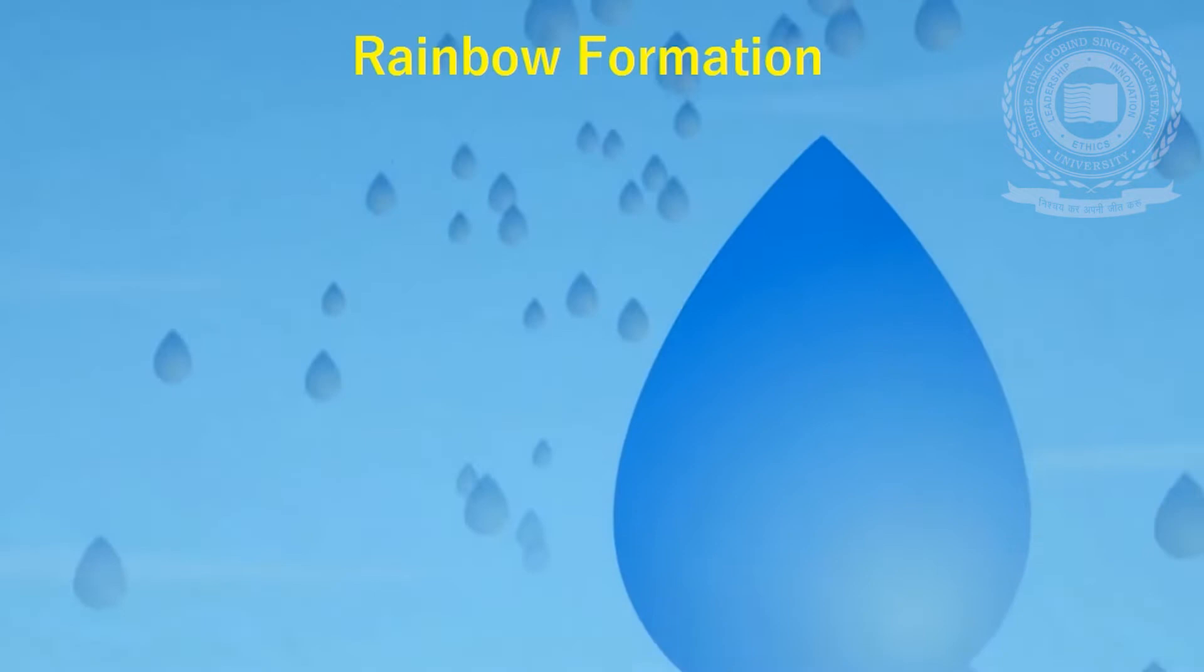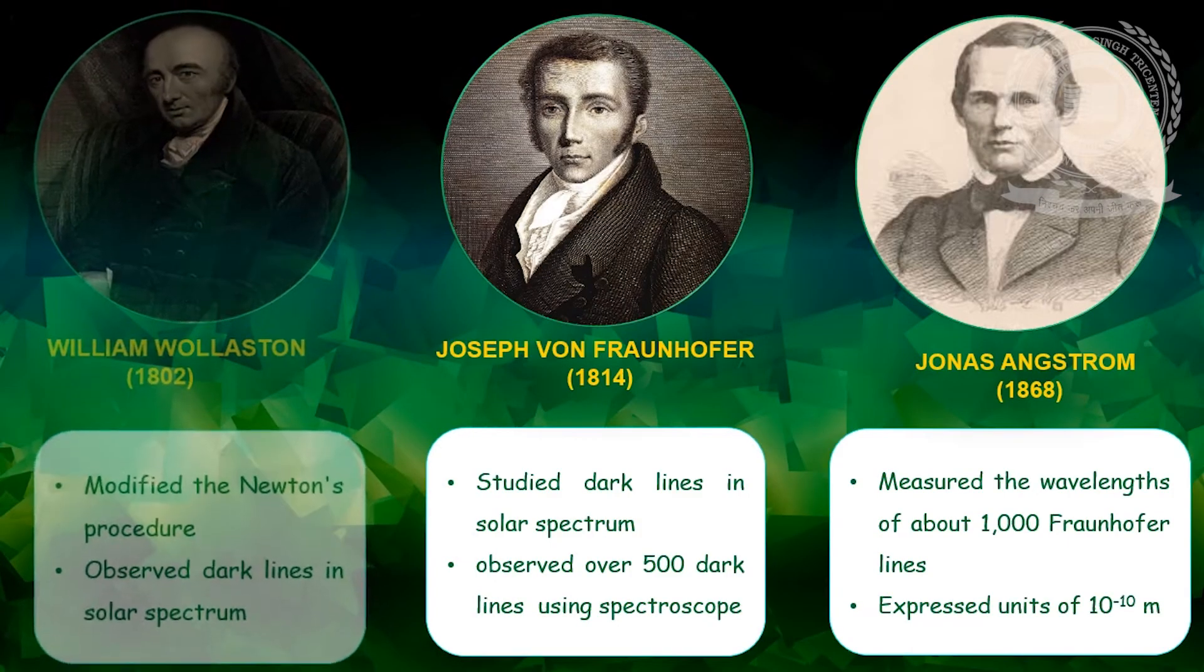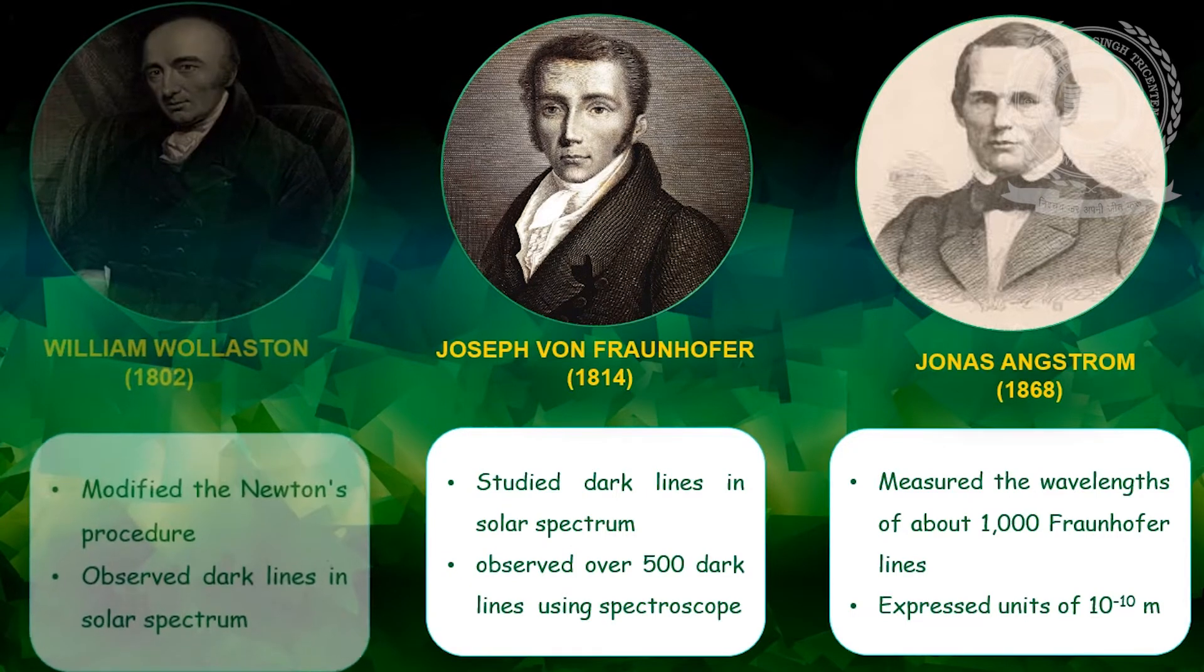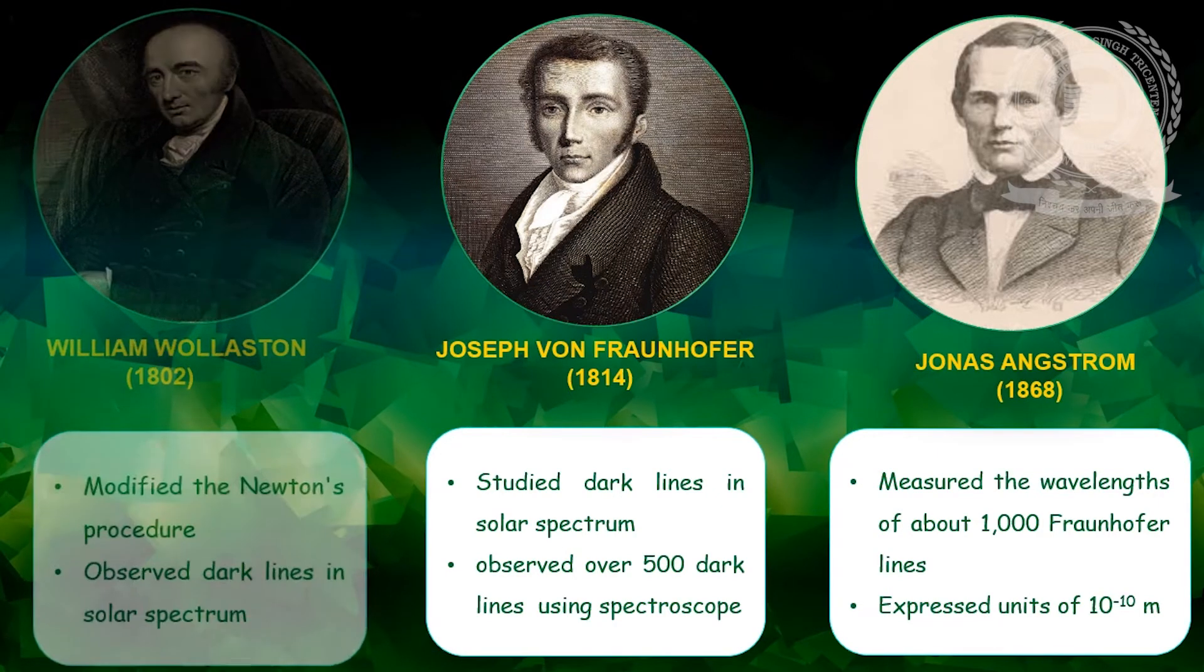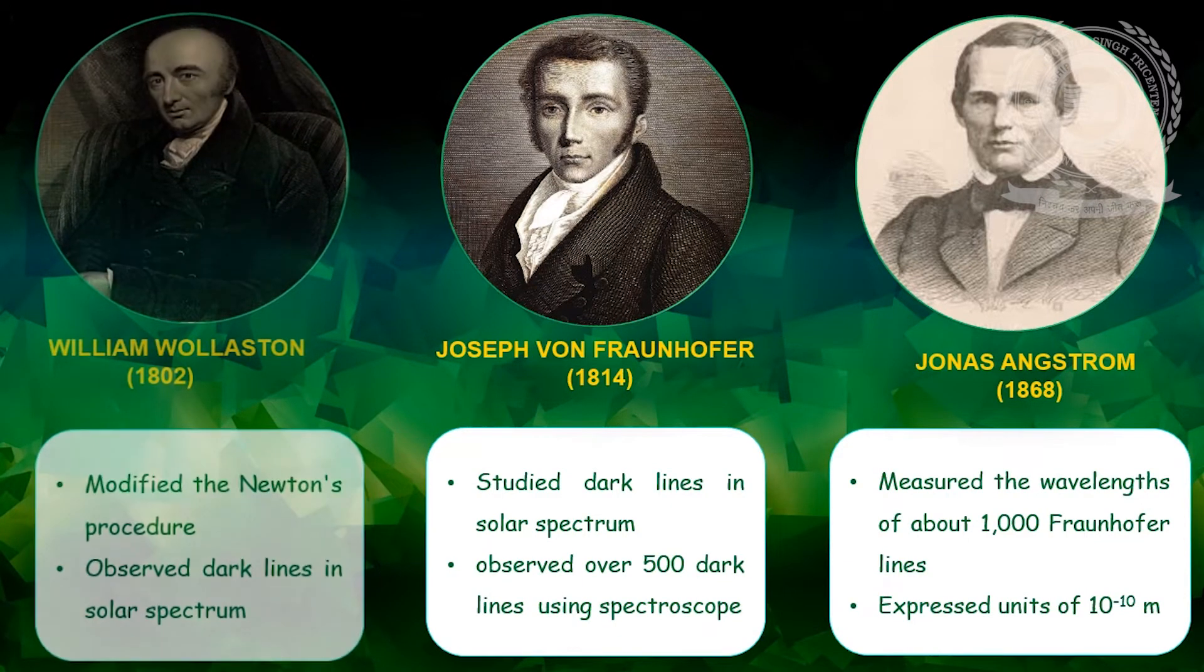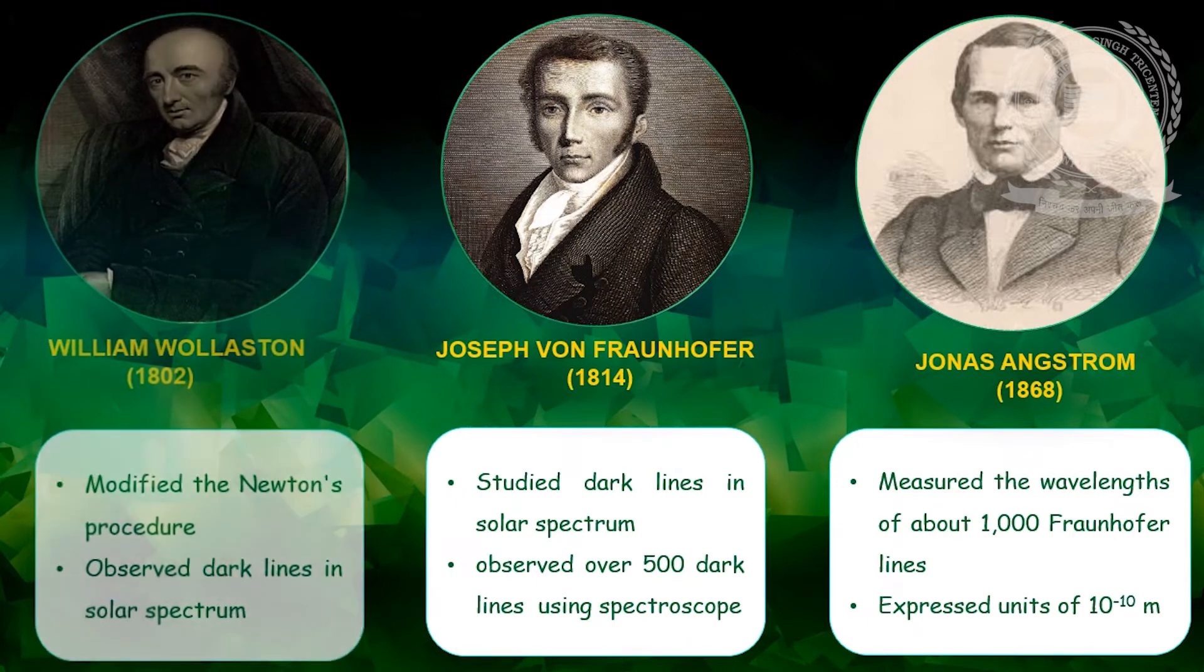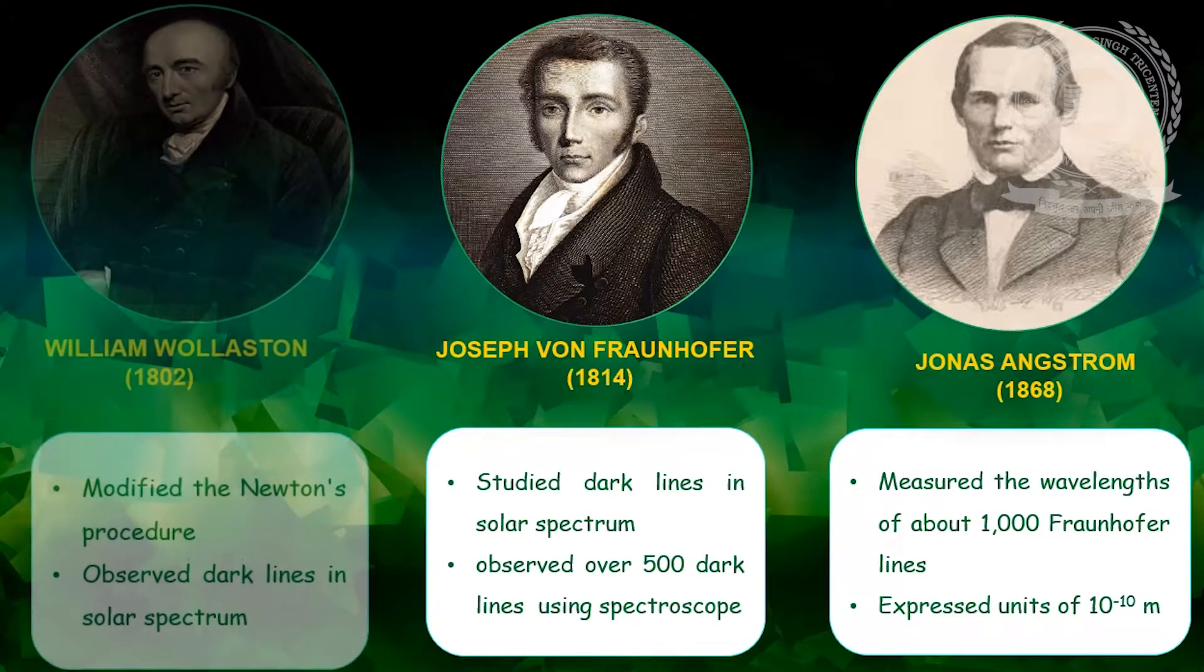Thus, Newton's simple experiments gave birth to the visible light or spectrum. Later, in 1802, William Wollaston slightly modified Newton's procedure by using a narrow slit instead of a round aperture and produced a series of visible spectral lines and observed that this continuous line spectrum from sun was irregularly interrupted by a number of dark lines that were parallel to the slit.